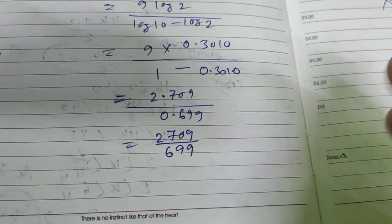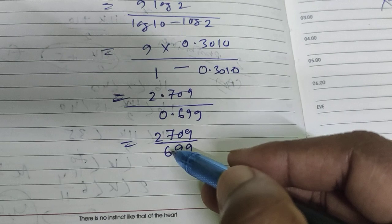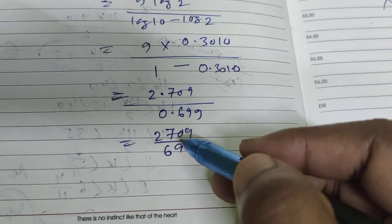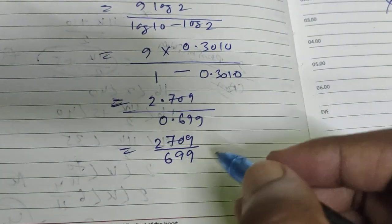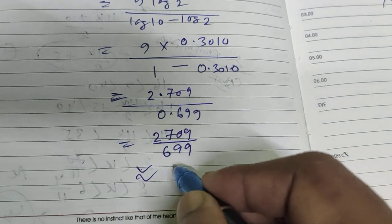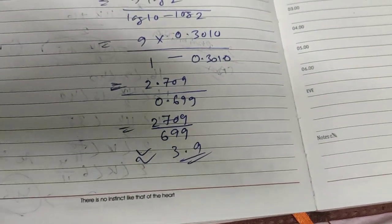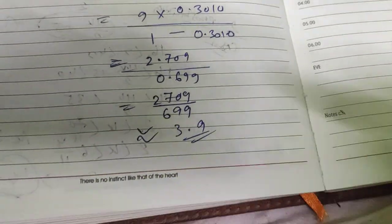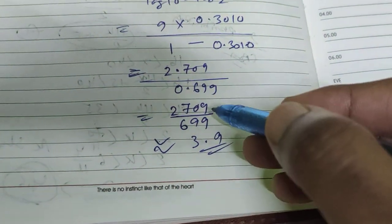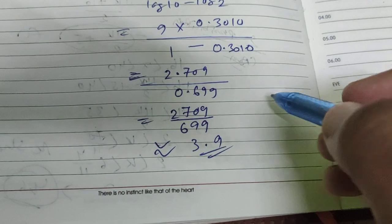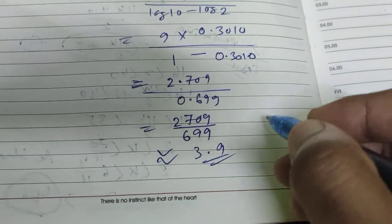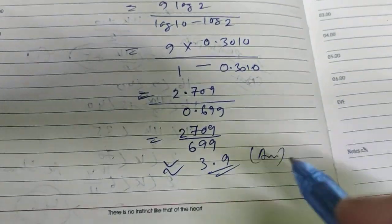The answer is close to 3.9. There may be options given, and you can calculate it more precisely according to that to choose the correct option.